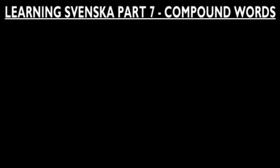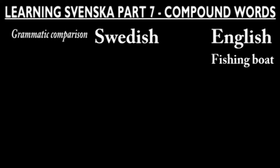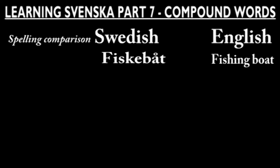Contrary to English, we always write two words as one if they are describing the same thing. For example, the word fishing boat is describing a specific type of boat, so with Swedish grammar we would write it as fishing boat, or in Swedish, fiskebåt.